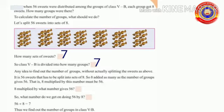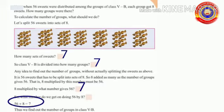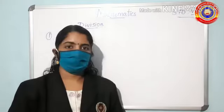Do you have any idea to find out the number of groups without actually splitting the sweets as above? Yes — 8 multiplied by what number gives 56? It is 7. So what number do we get on doing 56 divided by 8? That is 56 ÷ 8 = 7, because 8 × 7 = 56.